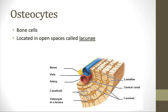Osteocytes are mature bone cells. Because they are living bone cells, they can't just grow in the middle of this hard extracellular matrix. Just like if you were going to have grass or weeds or a flower grow up through the crack in a sidewalk, you would need open spaces — those plants can't just grow up through the middle of the sidewalk; they need a crack in order to grow. Osteocytes, therefore, are located in open spaces called lacunae. So each one is called a lacuna.